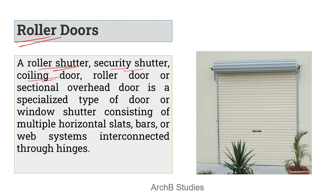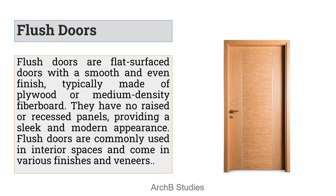Next is roller doors, also known as roller shutter, security shutter, coiling door, or sectional overhead door. These doors have multiple horizontal slats individually connected with joints that allow folding. When pushed upward, they coil into a single cylinder around a roller. Handles are at the bottom for smaller doors; in industrial settings, a key mechanism on the side operates the door up and down. Locking systems are provided at the base.